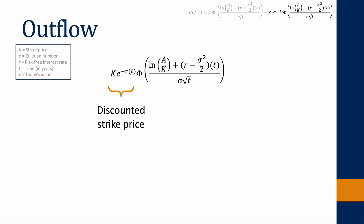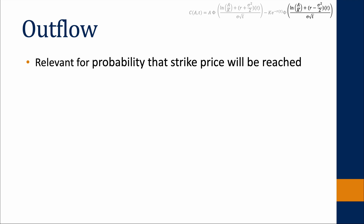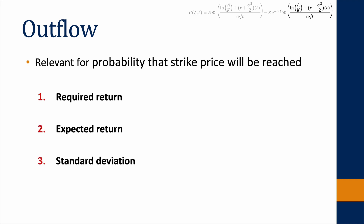The second part of the formula represents the probability that the strike price must be paid. The strike price must be paid if the stock price is higher than the strike price, since then it is profitable to exercise the option. For this probability, three factors are relevant: firstly, the required return — the return necessary for the stock to reach the strike price; secondly, the expected return; and thirdly, the standard deviation, which represents the volatility of the stock.